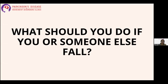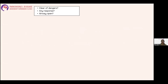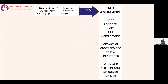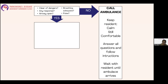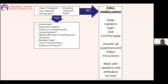Let's discuss what you should do if you or someone else falls. First, check if there is any clear sign of danger, any response, whether the airway is open, and if breathing and pulse are adequate. If no response or abnormal vitals, call the ambulance immediately, keep the person calm and comfortable, and wait with them until the ambulance arrives. If the person is responsive, check further: is there any intense pain, suspected fracture, trauma to the neck, back, or head, unusual or changing behaviour, marked difficulty breathing, intense chest pain, bleeding that won't stop after elevating the limb, loss of consciousness, or evidence of fracture? If yes to any of these, call the ambulance and wait with the person.